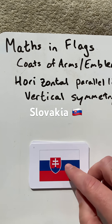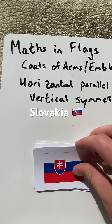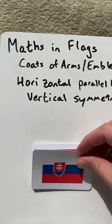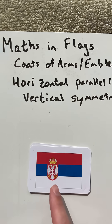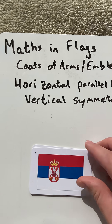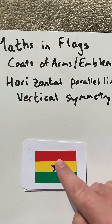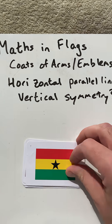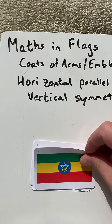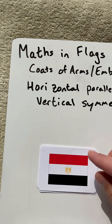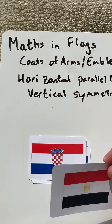The coat of arms of Slovakia is off-center, so it's no longer vertically symmetrical. Serbia, the same — the coat of arms is just off-center. Ghana absolutely has a vertical line of symmetry. Ethiopia, too. Egypt — the eagle is facing one way, so there's no vertical symmetry there.